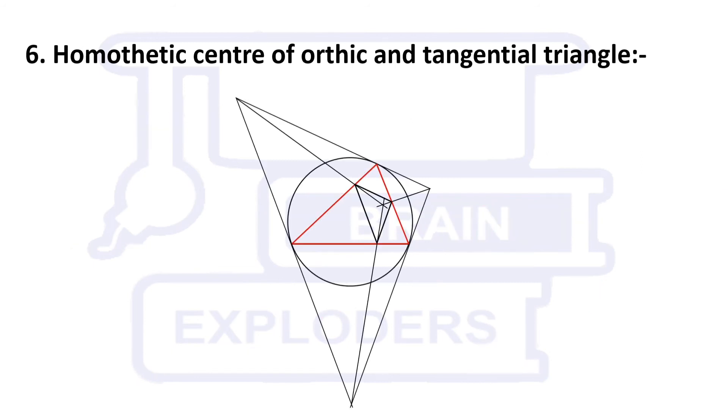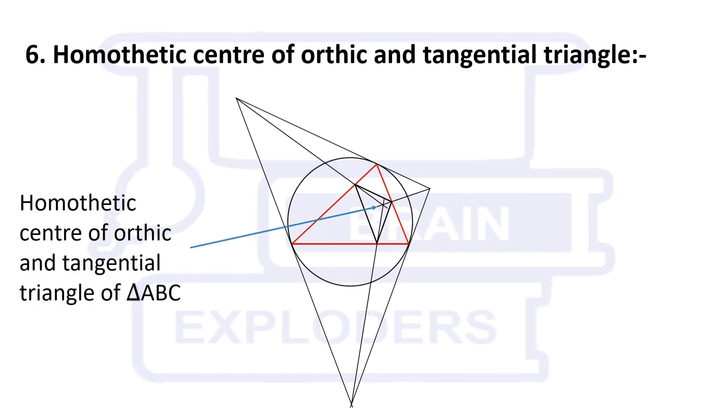Orthic triangle and tangential triangle are similar and one can be seen as the contraction of other and hence there exists homothetic centre of these triangles.